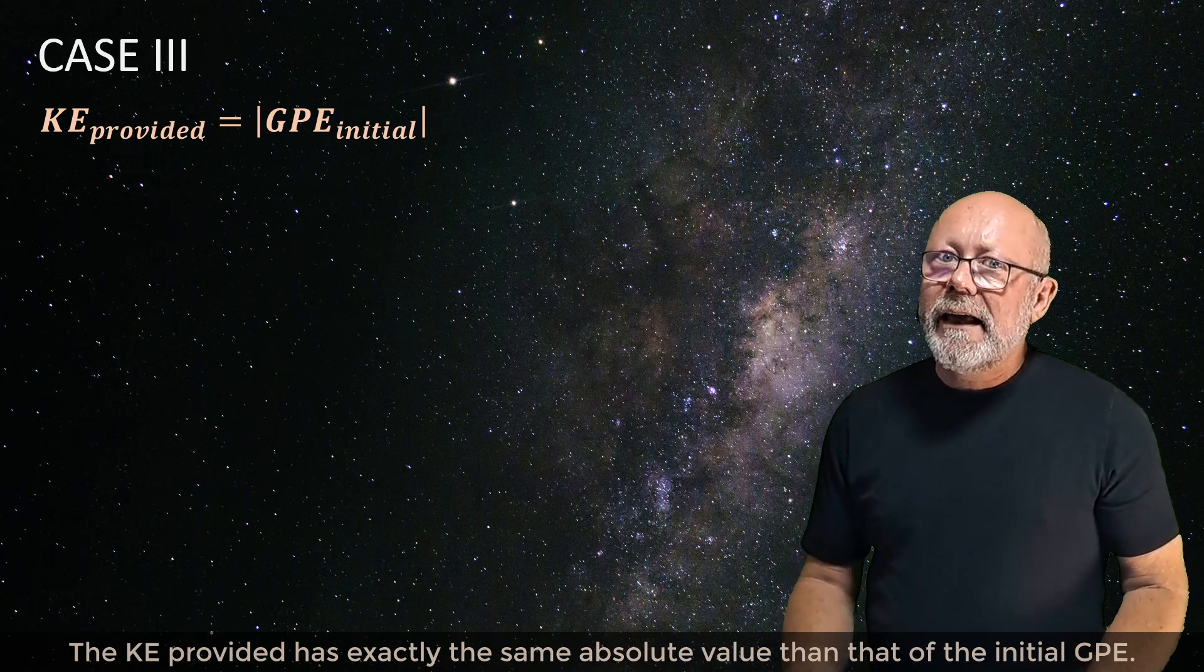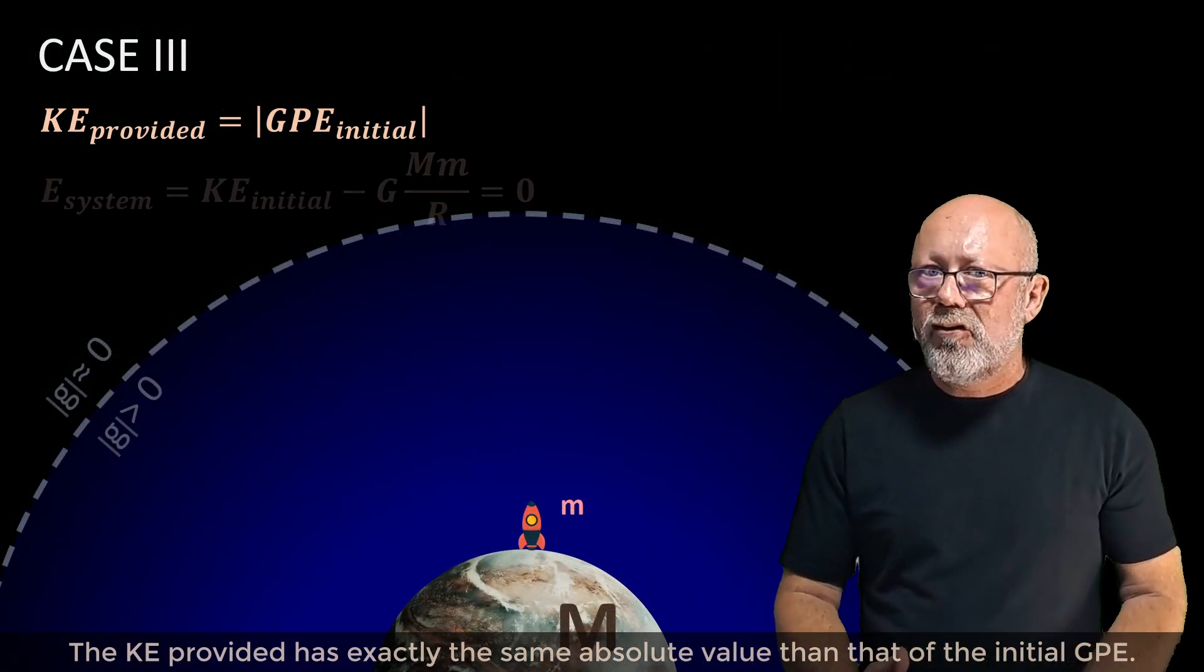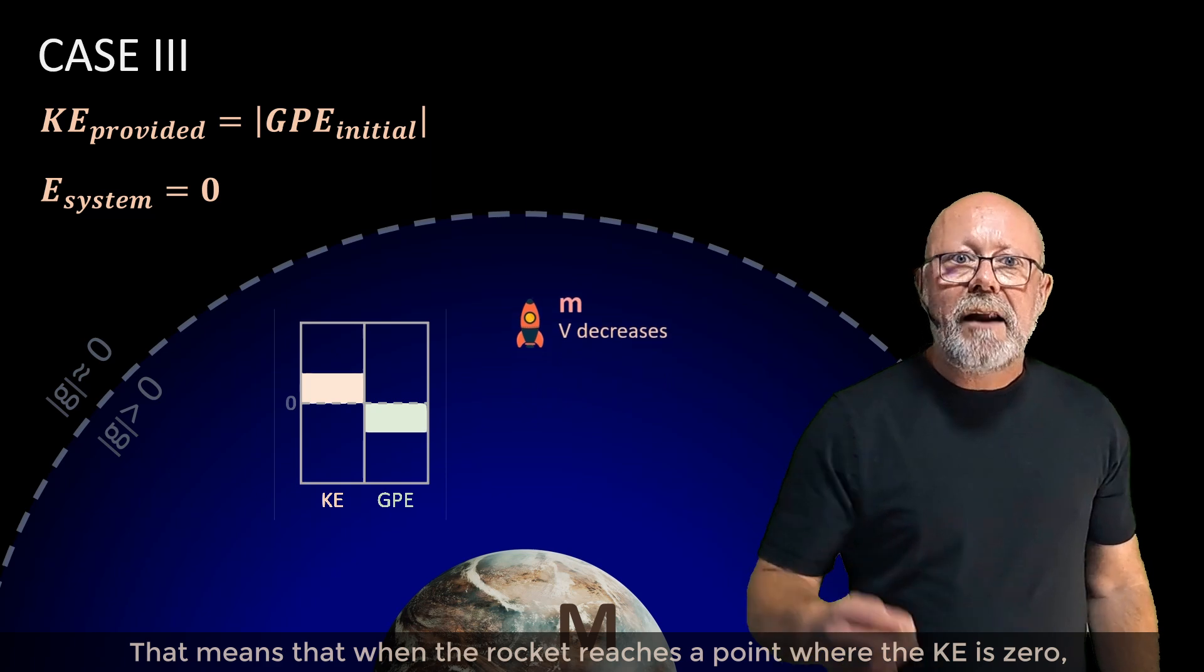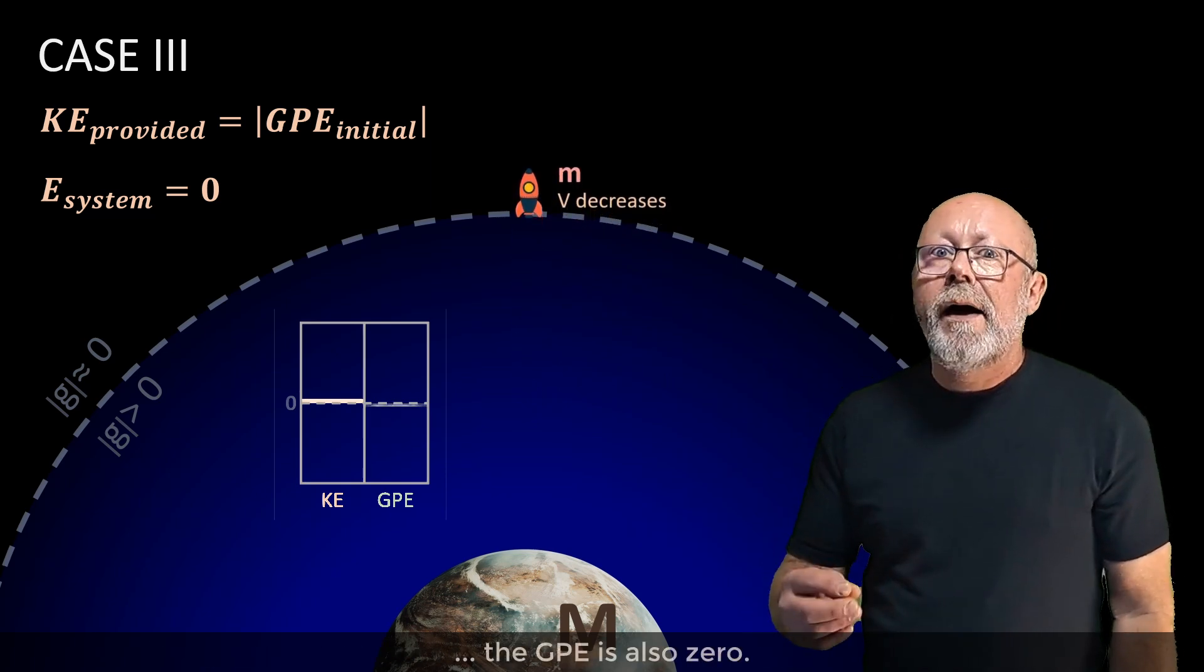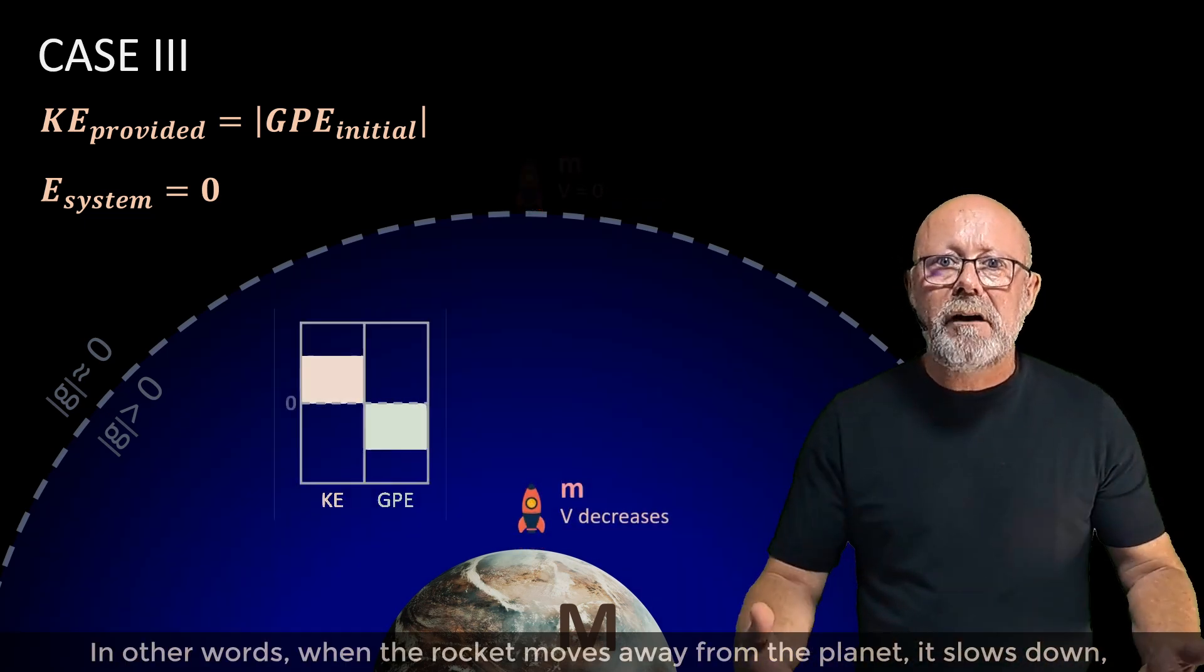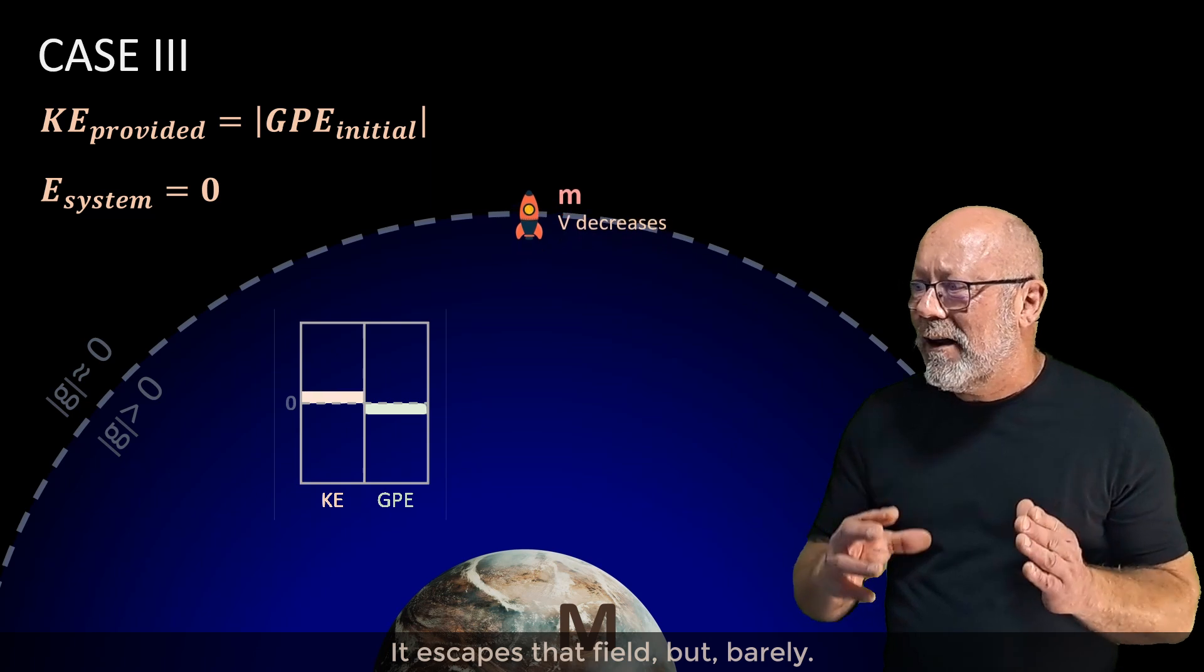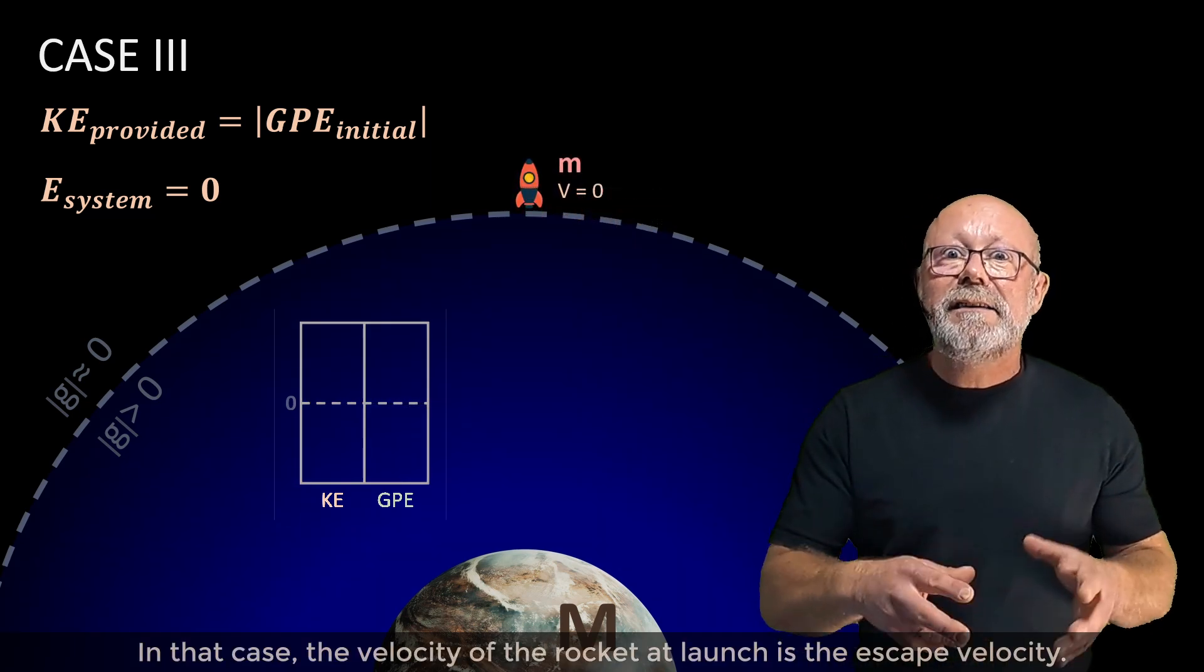Third case: the kinetic energy provided has exactly the same absolute value as that of the initial gravitational potential energy. The total energy of the rocket-planet system is thus zero. That means that when the rocket reaches a point where the kinetic energy is zero, the gravitational potential energy is also zero. In other words, when the rocket moves away from the planet, it slows down, and when it finally stops, it has just come out of the gravitational field of the planet. It escapes that field, but barely. In that case, the velocity of the rocket at launch is the escape velocity.